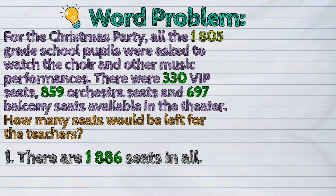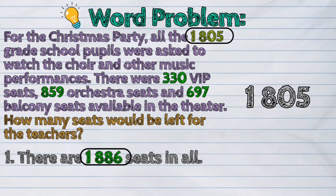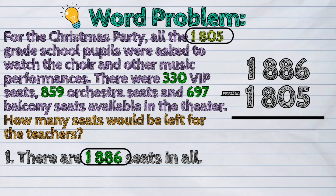Let's proceed now to step 2. To find out how many seats would be left for the teachers, we have to subtract the number of grade school pupils from the total number of seats we solved in step 1. So, it's 1,886 seats minus 1,805 pupils.